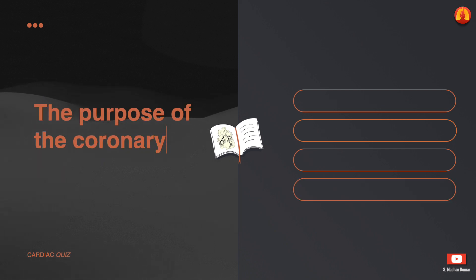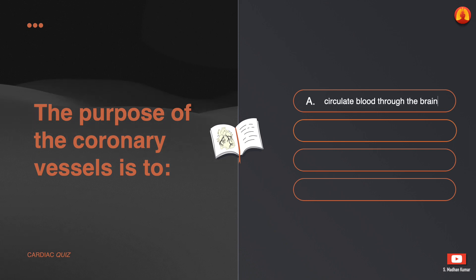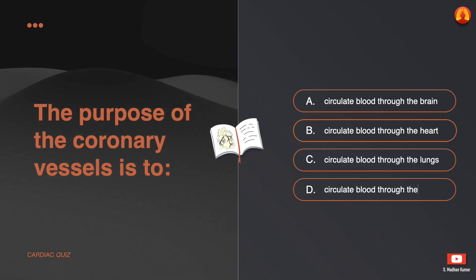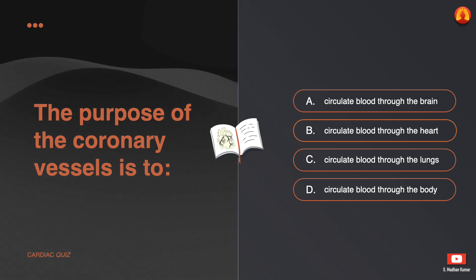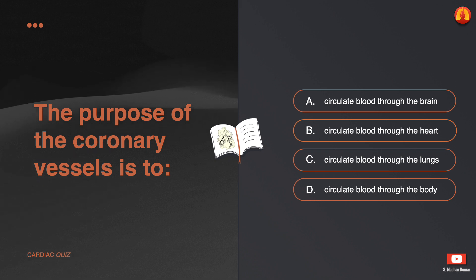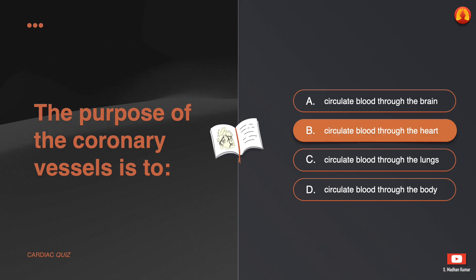The purpose of the coronary vessels is to: A. Circulate blood through the brain. B. Circulate blood through the heart. C. Circulate blood through the lungs. D. Circulate blood through the body. The correct answer is: circulate blood through the heart.